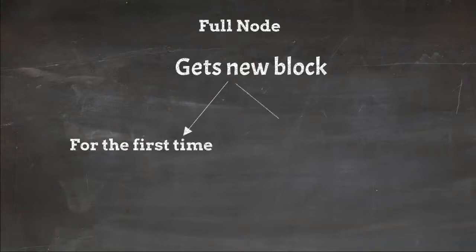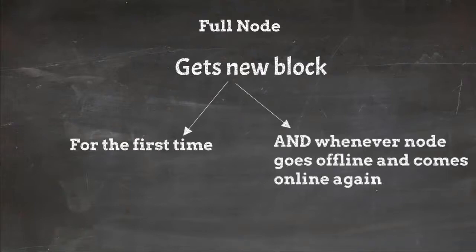It's not that full node will have to get blocks from its peers only for the first time. In fact, whenever a full node goes offline and comes online again, it will have to request for new blocks that might have been added during the time it was offline. Of course now it will be much less number of blocks and the process of syncing blocks will not be as long as it was for the first time.